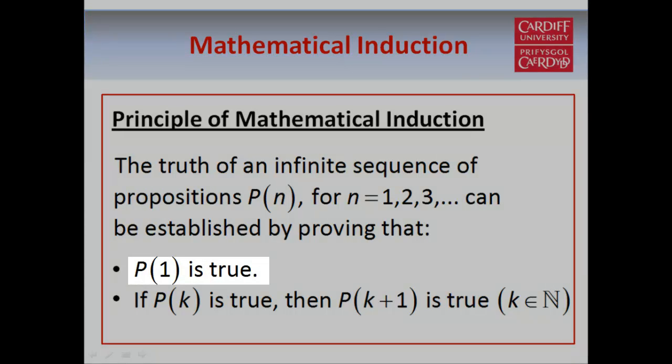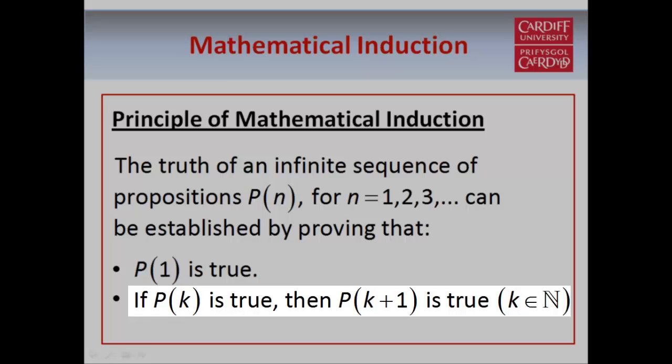First, we prove that the first statement is true, in other words p1 is true. And second, we prove that if pk is true for some fixed number k, then pk plus 1 is also true. And this will become more clear when we look at some examples very shortly.